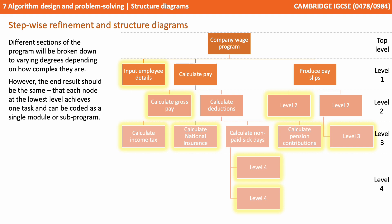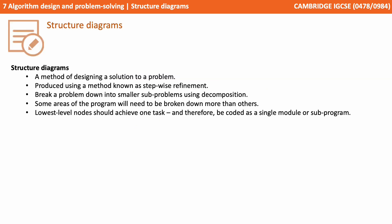Different sections of the program will be broken down to different degrees depending on how complex they are. However, the end result should be the same — that each node at the lowest level achieves one task and can then be coded as a single module or sub-program. That's everything you need to know for structure diagrams. Pause the video and take some notes.